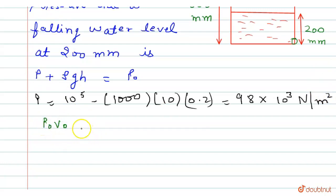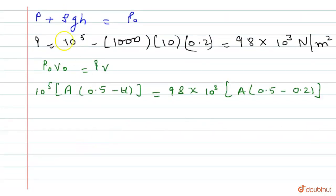Now P₀V₀ = PV, or we can say that 10⁵ × A(0.5 - h) = 98 × 10³ × A(0.5 - 0.2), where A is the area of cross-section of the vessel.